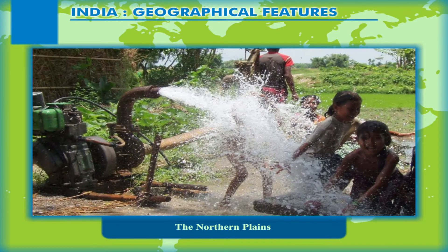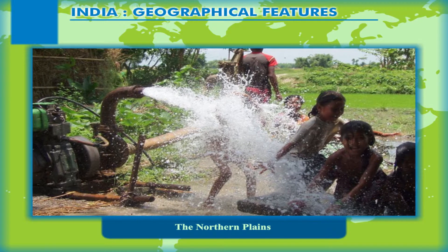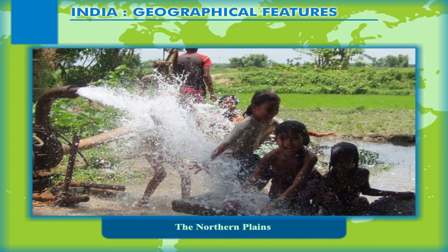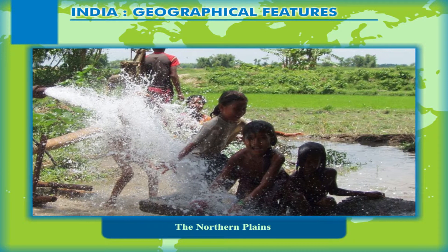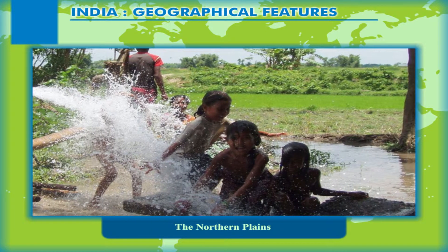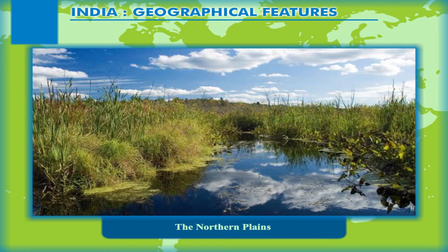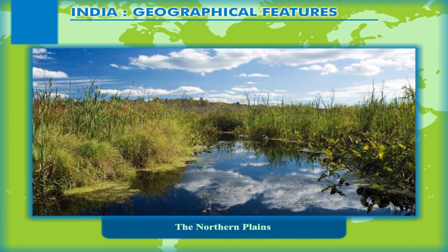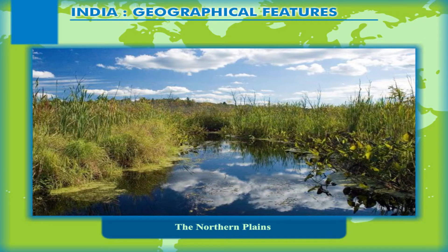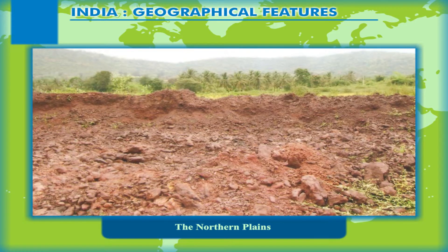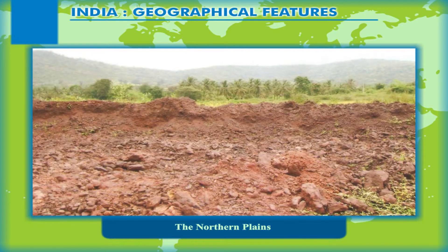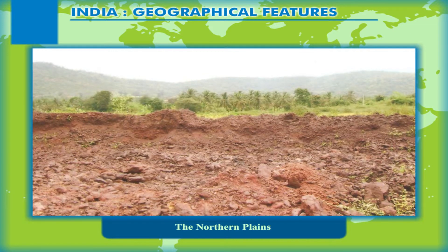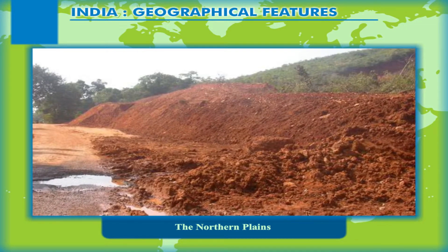The Terai is the zone of the reappearance of the streams that had disappeared underground in the Bhabar area. Due to the emergence of these streams, the Terai region is ill-drained and is characterized by the presence of swamps and marshes. Thus, it is suitable for the existence of dense forests and a variety of wildlife.